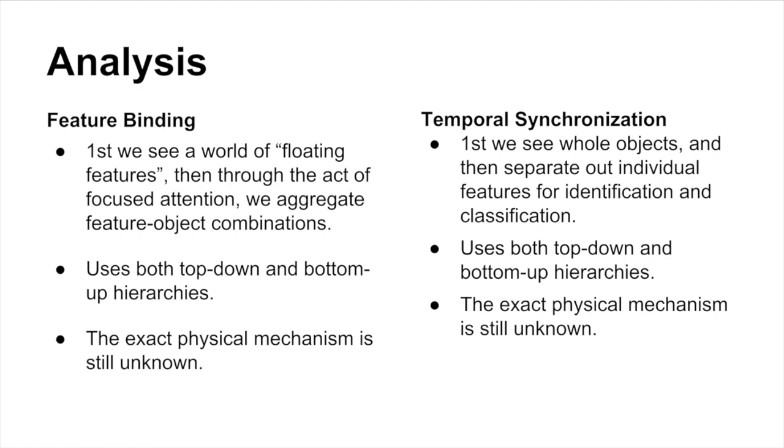In temporal synchronization involving neural networks, we see first whole objects, and then we separate out individual features for identification and classification. This also uses both the top-down and bottom-up approach, and the exact physical mechanism is still unknown.